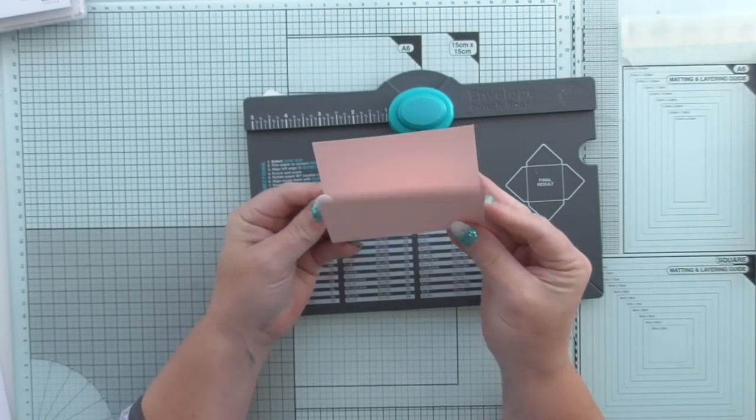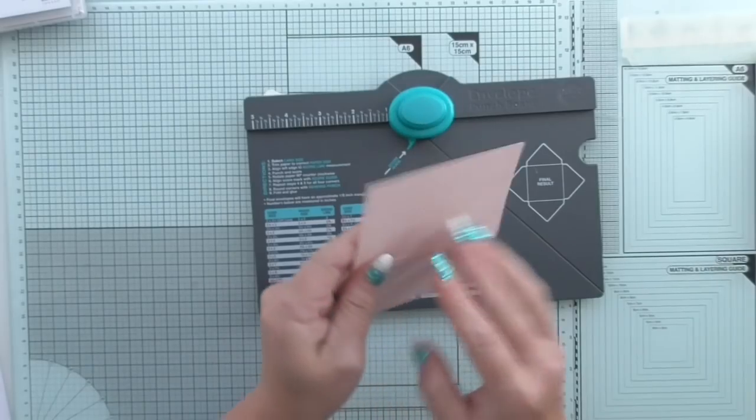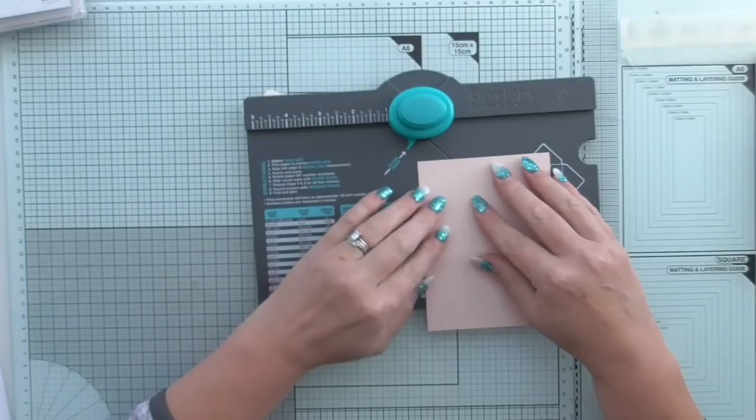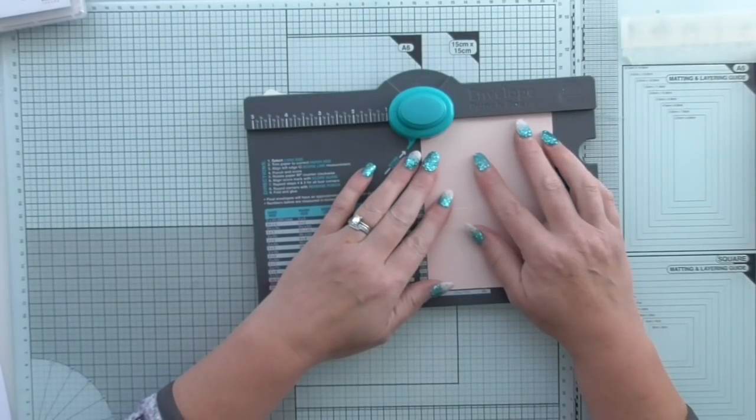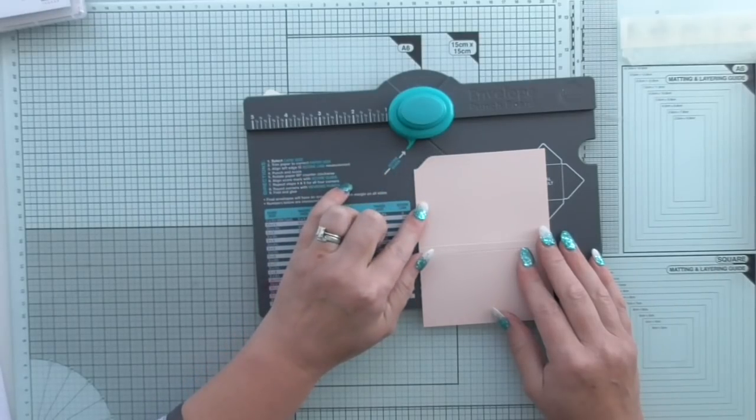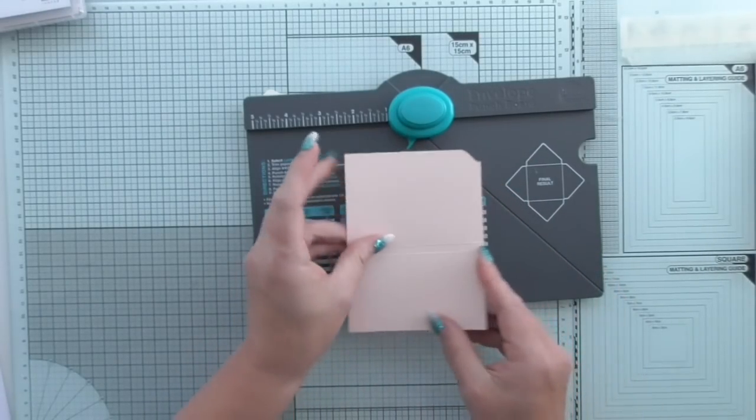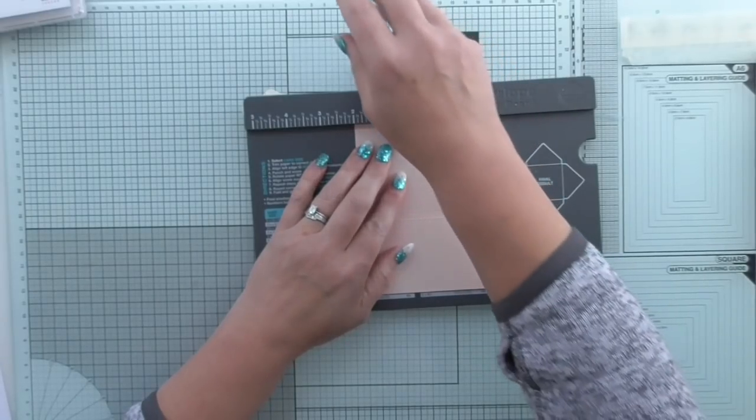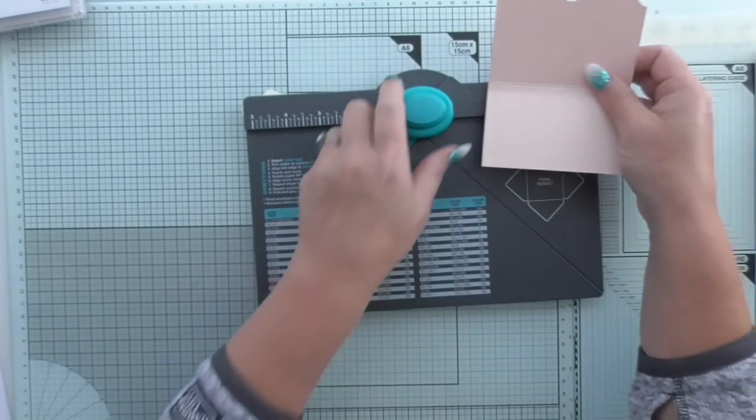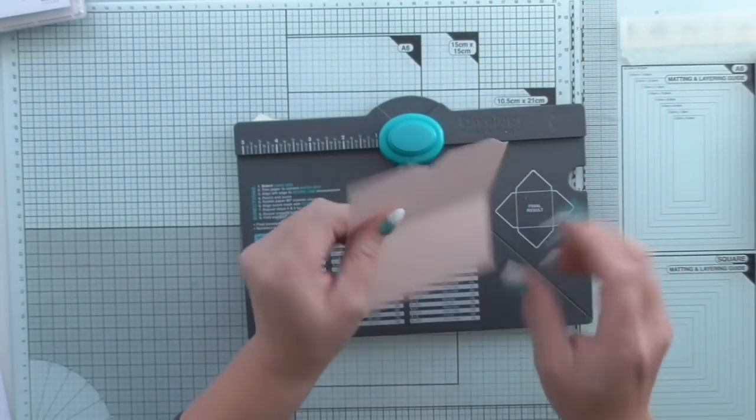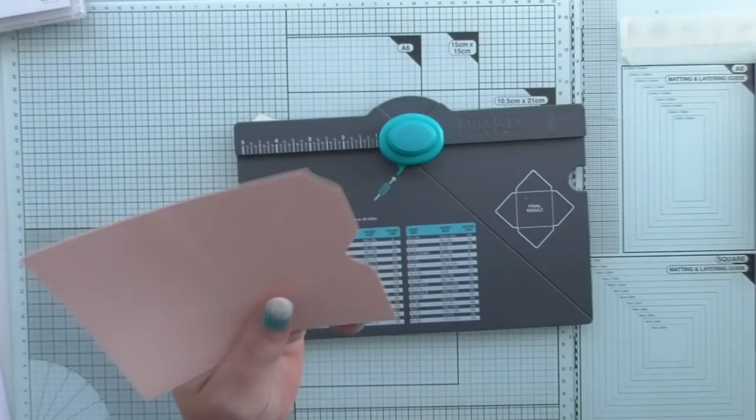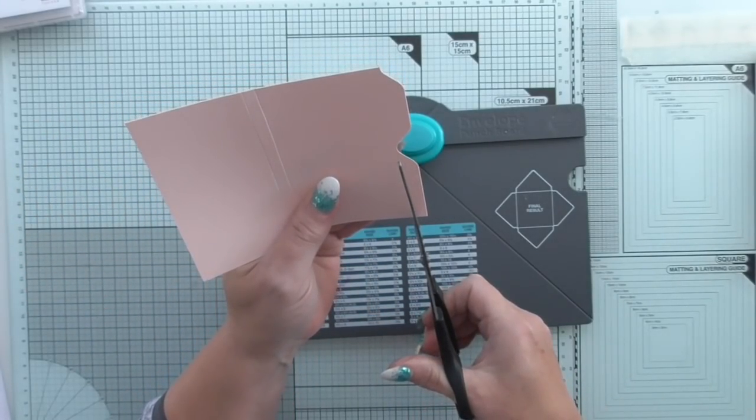I'm going to open that up and then I'm going to turn it and I'm going to punch on the back side at the top. I'm going to put this corner into there, eyeball it and punch, which creates me a tab shape. Then I'm going to flip it around and I'm going to go to the two inch mark and I'm going to punch again. Then I'm going to trim that off.